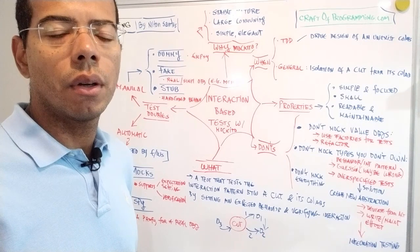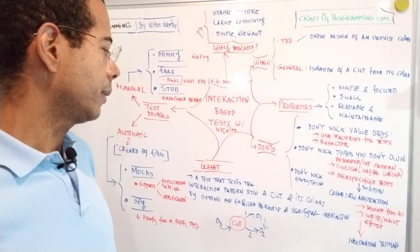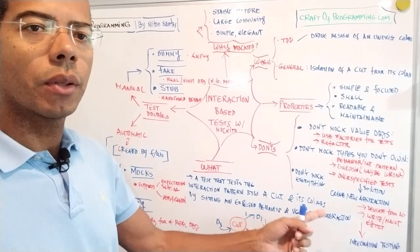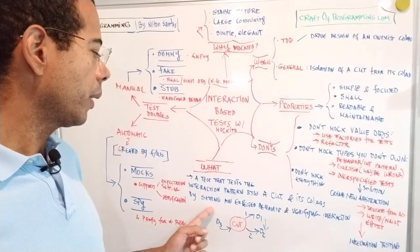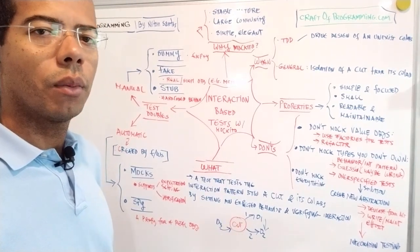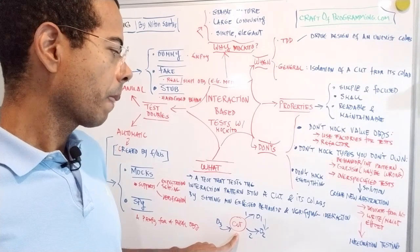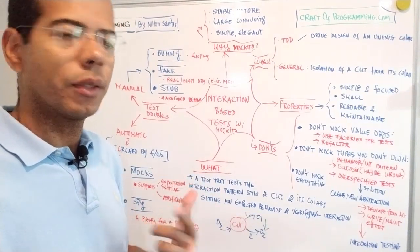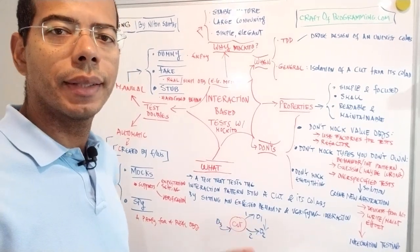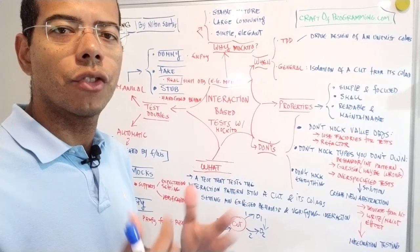Let's start with the very basics of what is an interaction-based test. Interaction-based testing is typically a test that tests the interaction patterns between a component under test and its collaborators. What you do is set an expected behavior on this component under test and then verify the interaction pattern between it and its collaborators. The collaborators of a component under test are the immediate objects with which your component under test exchanges messages.